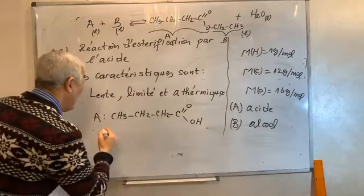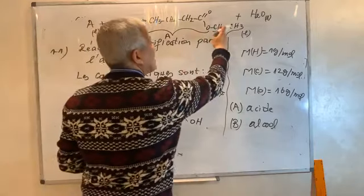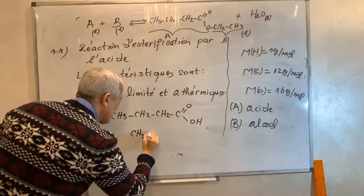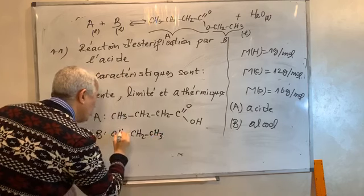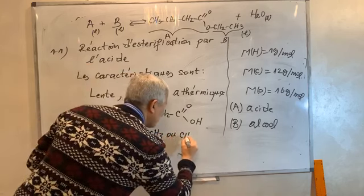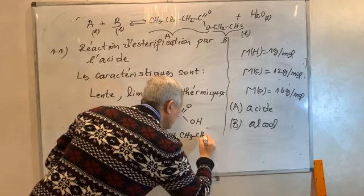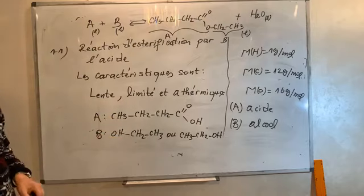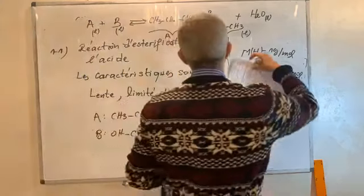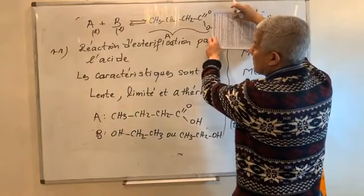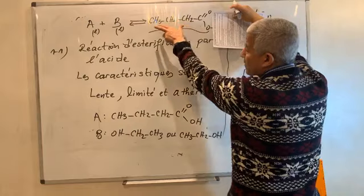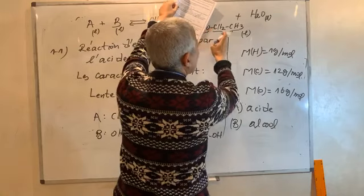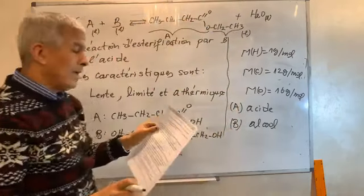L'alcool B correspond à CH2-CH3 lié à un OH. On peut l'écrire CH3-CH2-OH. Voilà la formule de l'acide et voilà la formule de l'alcool. On ajoute seulement H à la partie droite de l'ester pour obtenir la formule de l'alcool.